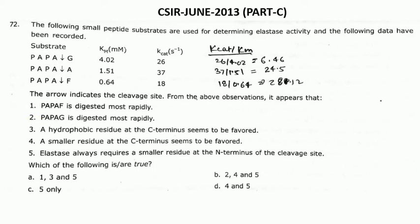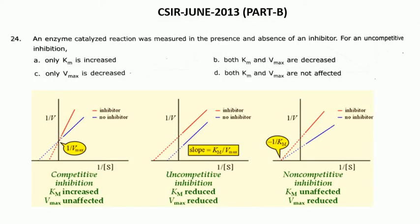The next question is related to inhibition kinetics, from CSIR June 2013 Part B. If you haven't studied inhibition kinetics, you won't be able to solve this question. There are 4 types of reversible inhibitions: competitive, non-competitive, uncompetitive, and mixed.